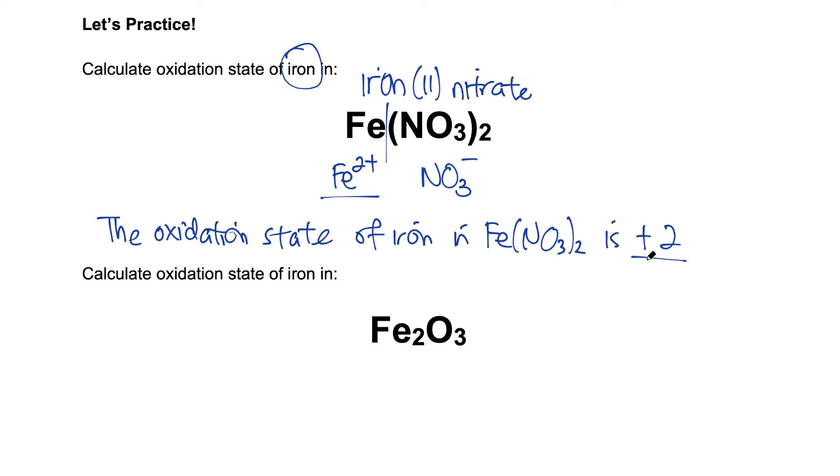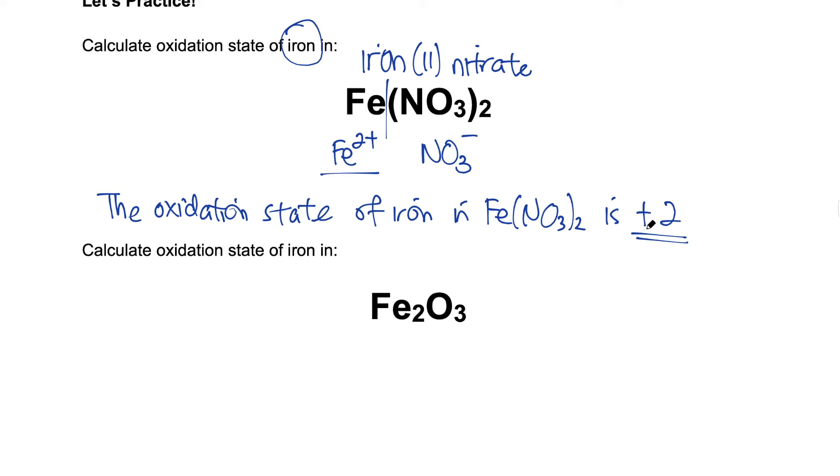Always remember to include the charge. The second one, Fe2O3. Let's say you do not know what the oxidation state is. We know that oxygen is always minus two in the compound.